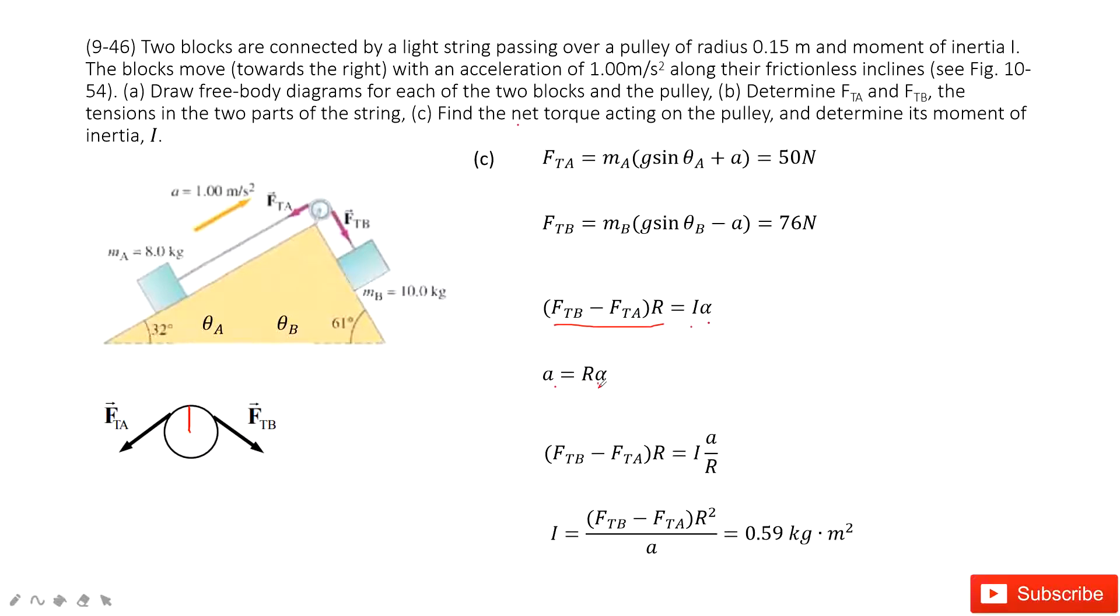And in this one, you can input this alpha inside. You get this function and solve this function. You can get the I, moment of inertia, in this function. Inside this function, you can see this one is given, this one is given, R is given, acceleration is given. So you can get the final answer, 0.59 kg times m squared. This is not so difficult. Thank you.